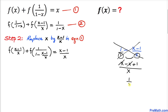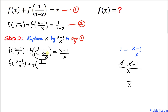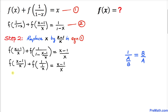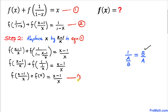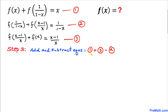So the function equation becomes f((x-1)/x) + f(x) = (x-1)/x, since the argument 1 divided by (1/x) simplifies to x. Let's call this equation number 3.